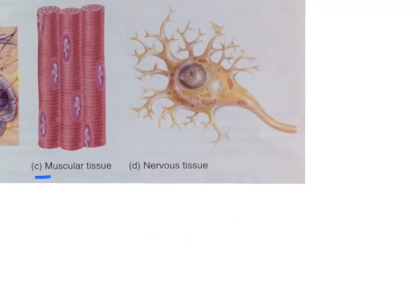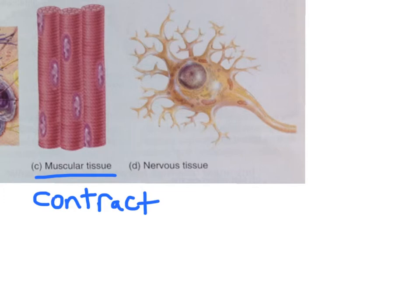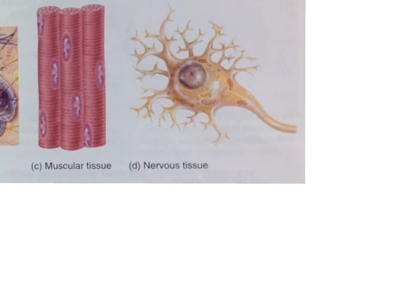Muscular tissue is made of cells that are adapted to contract or shorten in length. This contraction allows work to be done, such as moving the bones of the skeleton, pumping blood in and out of the heart, and moving food and fluids through the digestive system.